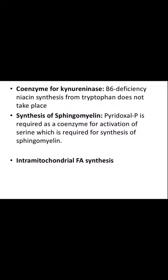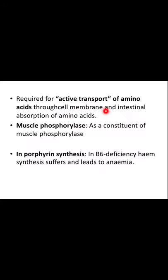Further functions of vitamin B6: it acts as a coenzyme for kynureninase, so in B6 deficiency, niacin synthesis from tryptophan does not take place. It is used in the synthesis of sphingomyelin, in intramitochondrial fatty acid synthesis, and it is required for active transport of amino acids through the cell membrane and intestinal absorption of amino acids. It also acts as a constituent of muscle phosphorylase, which is needed in the breakdown of muscle glycogen.